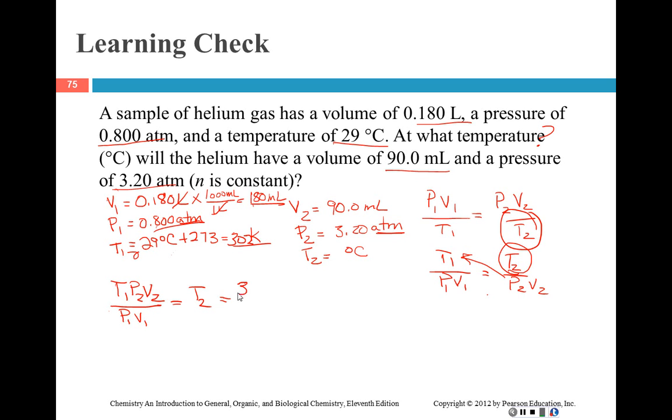Then I just plug in. T1 is 302 Kelvin, P2 is 3.20 atmospheres, V2 is 90 milliliters. P1 is 0.8 atmospheres, and V1 is 180 milliliters. Right now I'm going to stop, and I'm going to make sure I've got atmospheres that will cancel, and I've got milliliters that will cancel, and I'm going to be left with Kelvin, which is what I have to do at first.